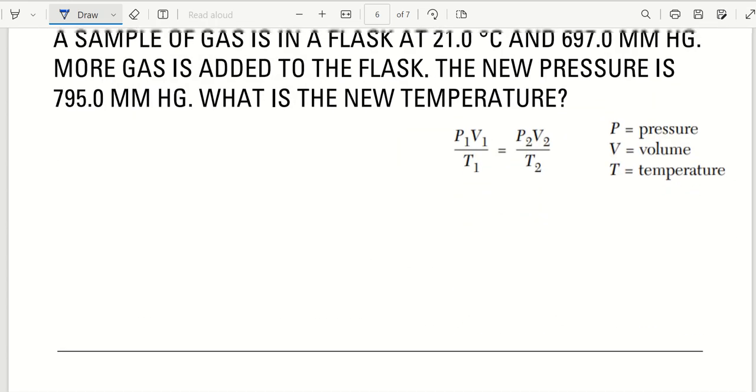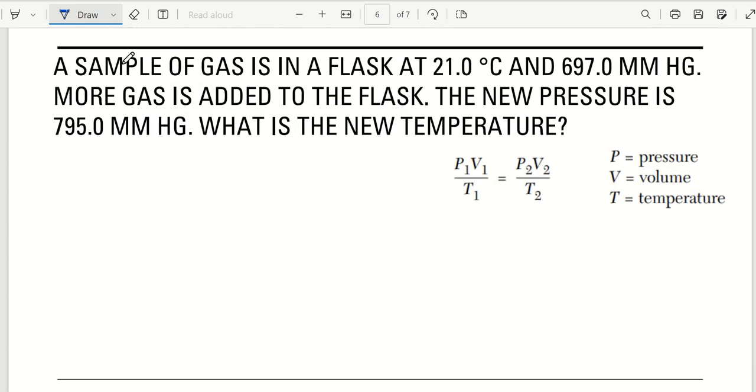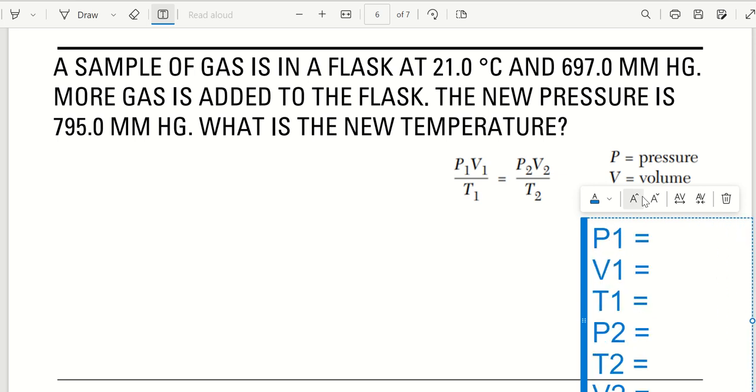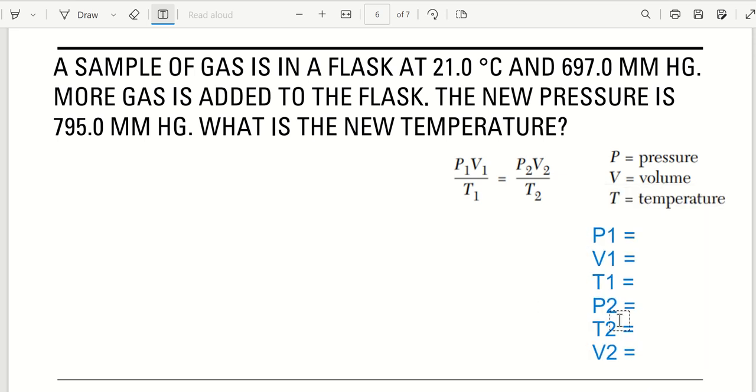Alright, so we're going to do just one practice equation. Ready? So what I suggest is when you determine you're using combined gas law is just make your list of variables. So P1, V1, T1, P2, T2, and V2. Alright, now let's see what we got. Let's just start reading the question.